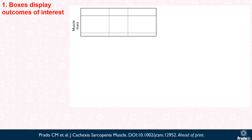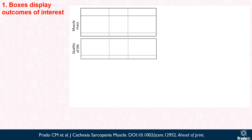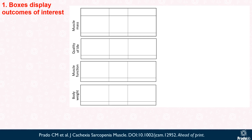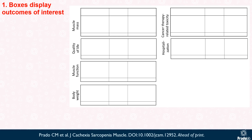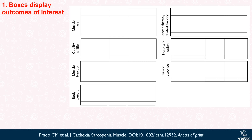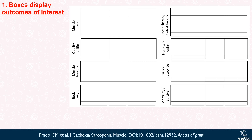In a harvest plot, boxes display outcomes of interest. For example, in our systematic review we evaluated the effects of HMB supplementation on muscle mass, quality of life, muscle function, body weight, cancer therapy related toxicity, hospitalization, tumor response, and mortality and survival.